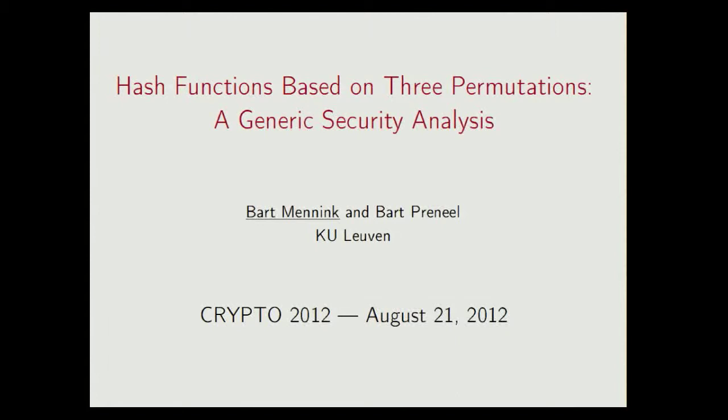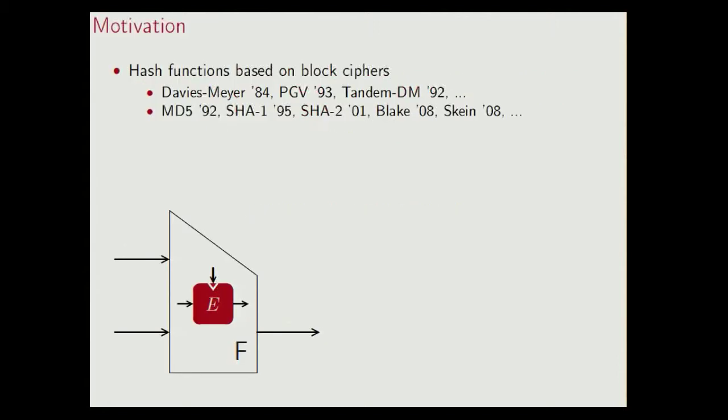Thank you for the introduction. Hash functions based on permutations — what do we essentially mean by this? Well, traditionally, hash functions are based on block ciphers. The idea is that one builds a compression function on a block cipher, and then this compression function is iterated. This approach is well established. There are many compression functions following this design, like the Davis-Meyer compression function, the BGV class of functions, and also many widely used hash functions like the ones of the SHA family follow this approach.